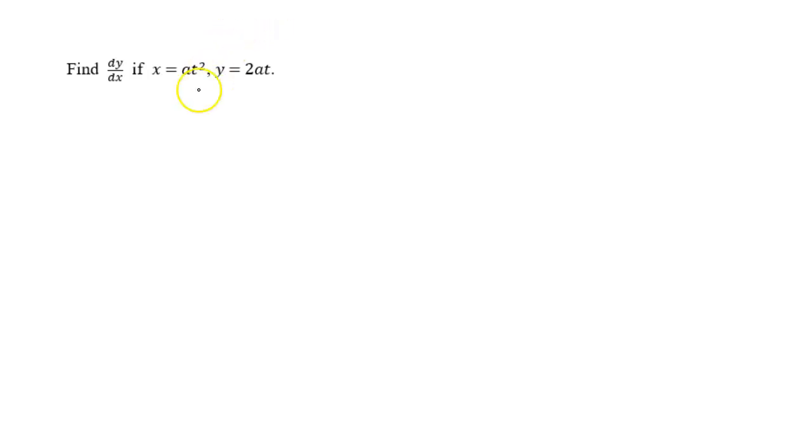Hello to everyone. Welcome back to my channel. Today's question is find dy over dx if x equals at square and y equals 2at.